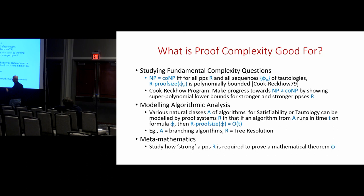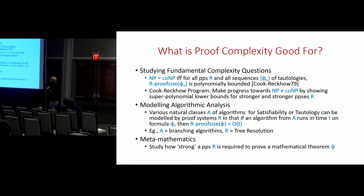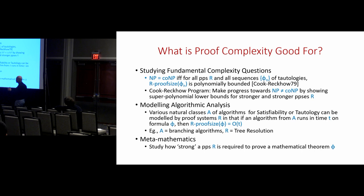The Cook-Reckhow program is to make progress towards separating NP from co-NP by showing superpolynomial lower bounds for stronger and stronger propositional proof systems R. We say a proof system R' is stronger than R if anything provable efficiently in R can also be proved efficiently in R'. Natural proof systems often have an ordering from weaker to stronger systems, and proving lower bounds for stronger and stronger systems makes progress towards this complexity conjecture.